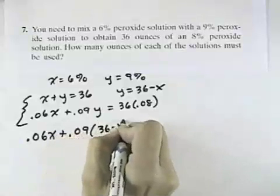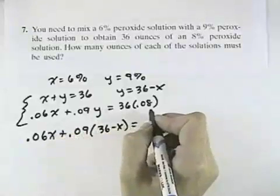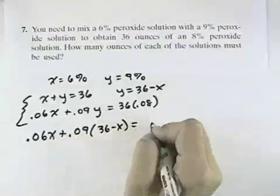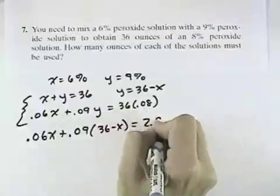So, we have 36 minus x in place of y, and then 36 times 0.08 will equal 2.88.